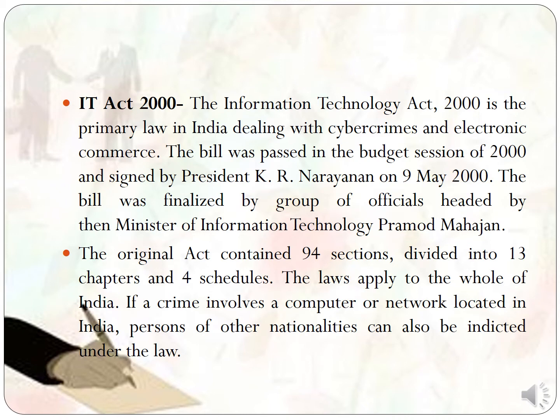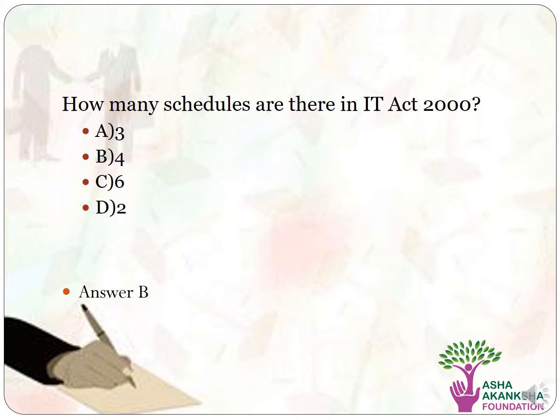How many schedules are there in the Information Technology Act 2000? Options are: A) three schedules, B) four schedules, C) six schedules, D) two schedules. The correct answer is option B, that is four schedules.